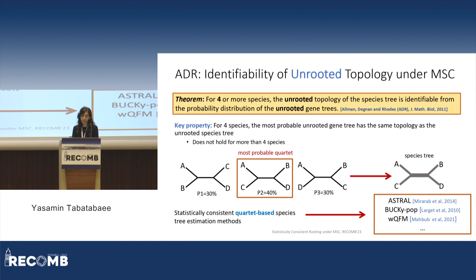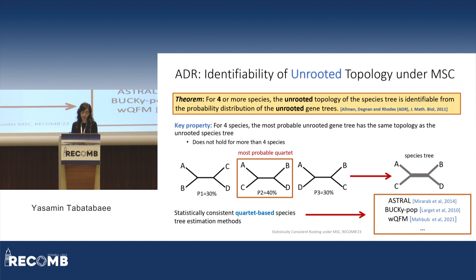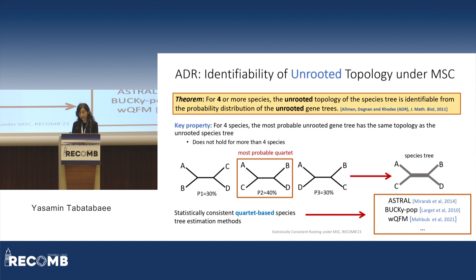It is a well-known result that under the MSC, for four or more species, the unrooted topology of the species tree is identifiable from the probability distribution of the unrooted gene trees. This result was proved by Allman, Degnan, and Rhodes in 2011 and has been the basis of several statistically consistent quartet-based species tree estimation methods, a good example being ASTRAL. The main idea is that for four species, the most probable unrooted gene tree has the same topology as the unrooted species tree, so the dominant quartet tree gives us the species tree topology. This property does not hold for more than four species, and as we will see, even the case of five taxa is much more complex.